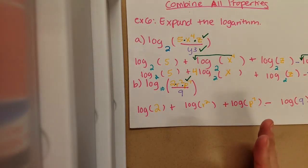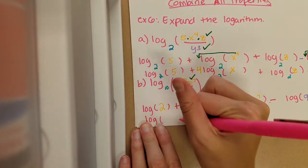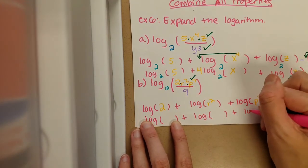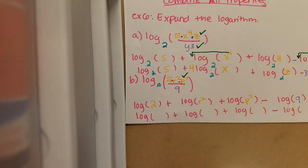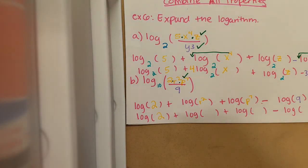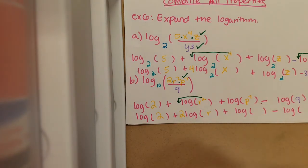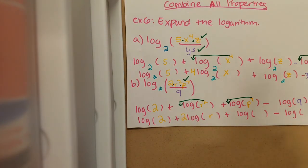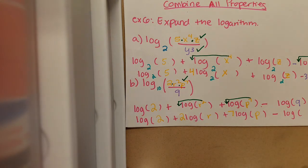The last step is to deal with any power property. If you spot any exponents, we're going to move those to the front of the log. My first log has a 2 — it does not have any exponents, so my first one is just a 2. My second number has a squared as an exponent, so I will be shifting that to the front of my logarithm. So my 2 will move to the front, and my r is going to stay inside the log. We have this exponent to the seventh power, so we're going to shift that to the front of the log — my 7 will now be in front of the log and the p will be inside. Finally, my last number doesn't have an exponent, so I'm just going to leave it as minus log of 9.